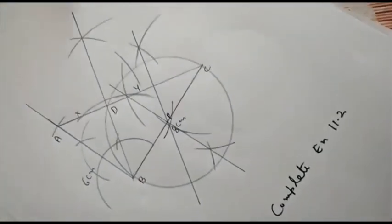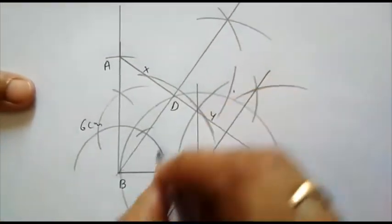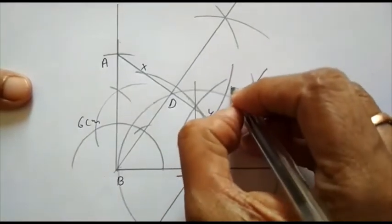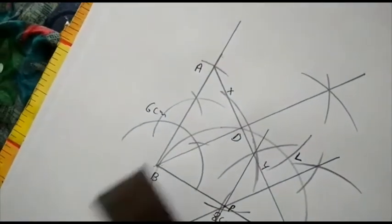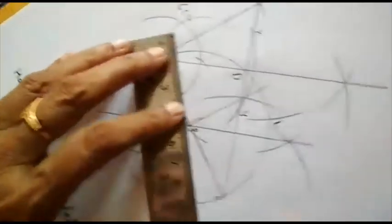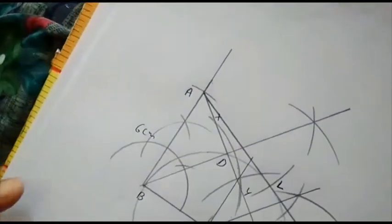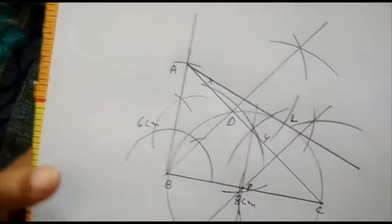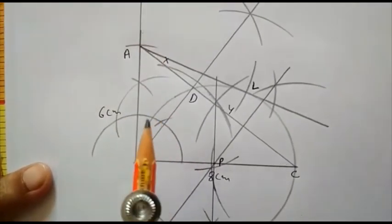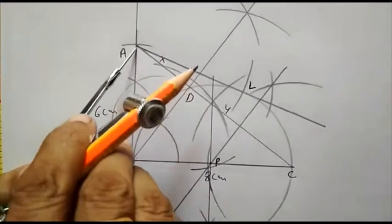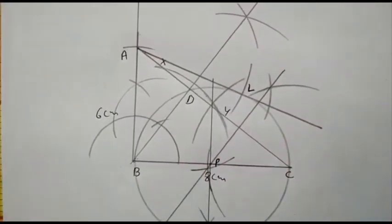Equal to AB, I have 6 centimeters. Draw an arc on the circle, and let it be point L. Now I join AL. So we have two tangents on this circle from point A: one tangent is AB, another tangent is AL.